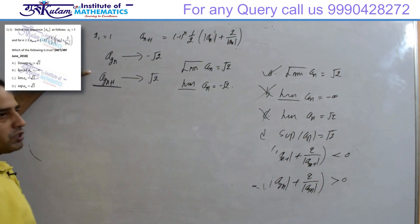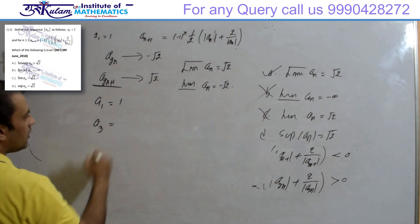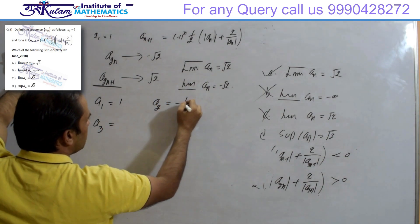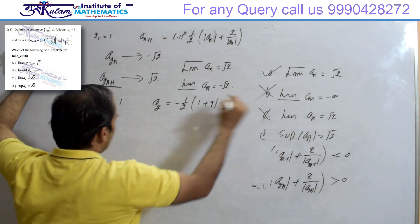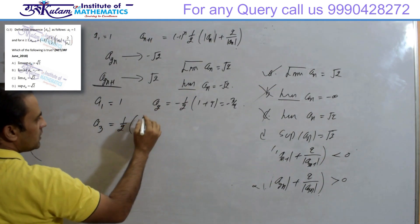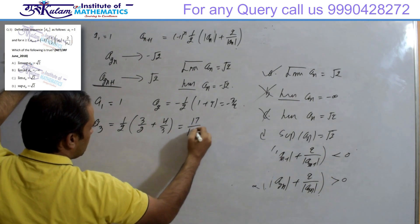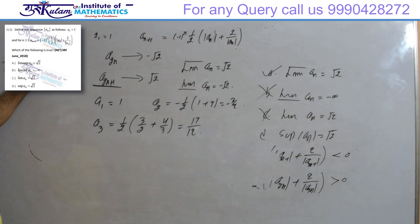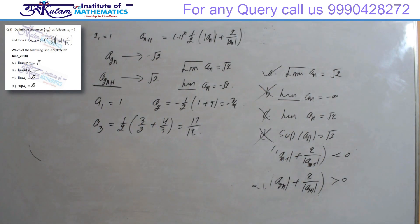Now to find the supremum, we look at the positive terms. a1 = 1. a2 = -(3/2). a3 = (1/2)(3/2 + 4/3) = 17/12. This value 17/12 is greater than √2, so the supremum is never equal to √2. Therefore option D is also false. Only the first option is true; all remaining options are false.